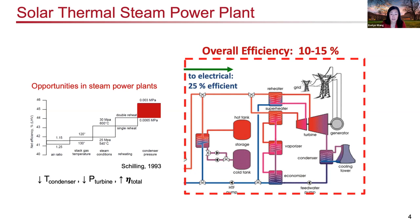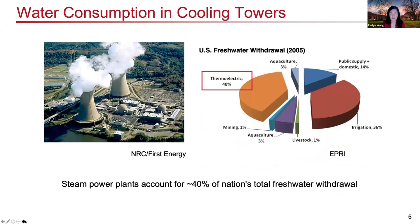A correlated problem related to phase change is water consumption. For thermoelectric power plants, the fresh water withdrawal to cool the condensers can be significant — that's why you see vapor plumes coming out of these power plants. In fact, steam power plants in the U.S. account for about 40 percent of our nation's total fresh water withdrawal. So we must think about how to take advantage of phase change while minimizing the amount of water used in the system.